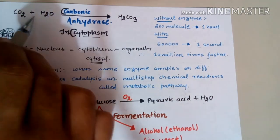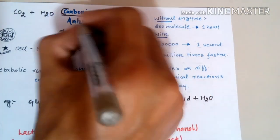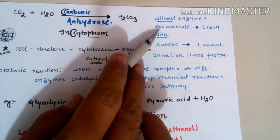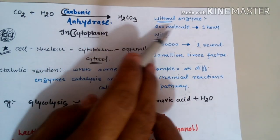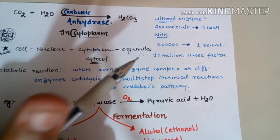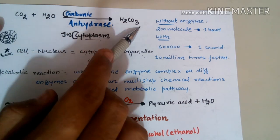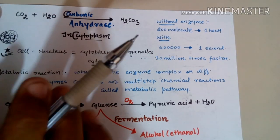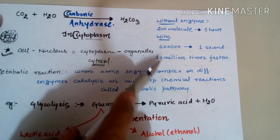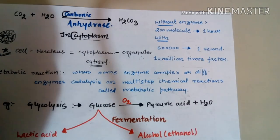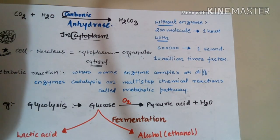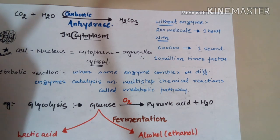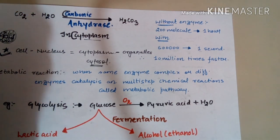Without the enzyme, only 200 molecules of H₂CO₃ are formed per hour. With carbonic anhydrase, 600,000 molecules are formed per second — that is 10 million (one crore) times faster. This illustrates the enormous importance of enzymes; for instance, digestion of food would take approximately 45–50 years without them.